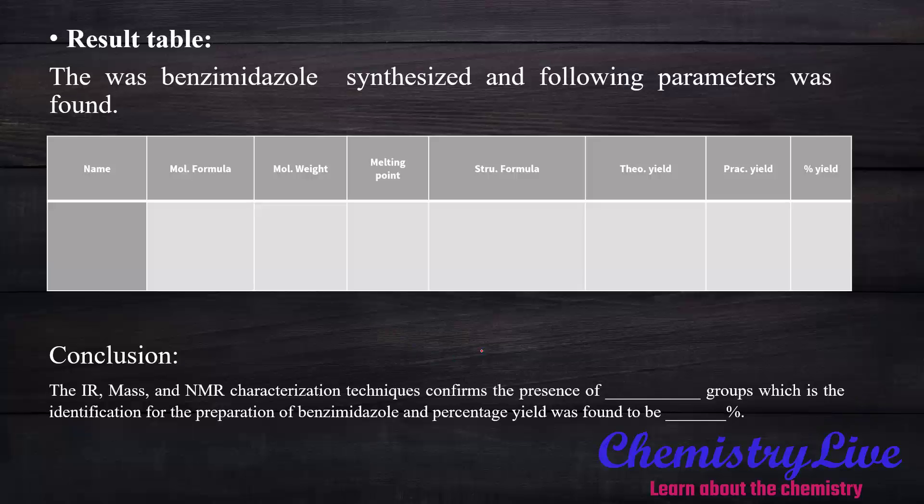Result table. In the result table you have to write name till the percentage yield what we get from the practical analysis. The IR, mass and NMR technique shows us the presence of NH and C=N or N=C group. The percentage yield we will get here. You have to write down here.